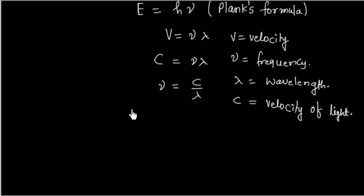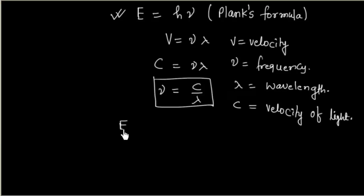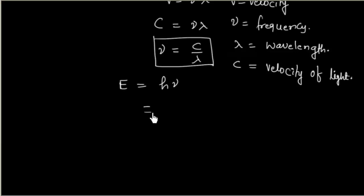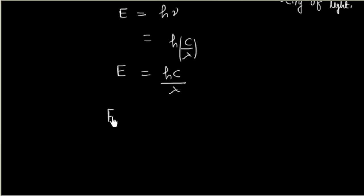So this becomes C = νλ, and from here we can write ν = C/λ. If I put this value of ν into the equation, I will have E = hν, or E = hC/λ. So the energy of a photon is given by the formula hC/λ.